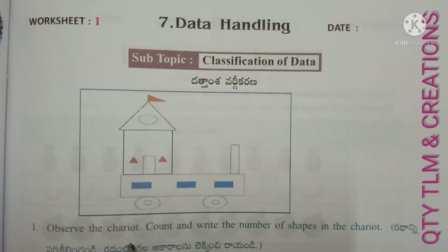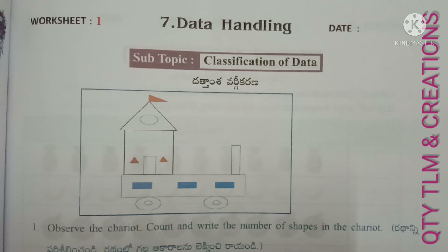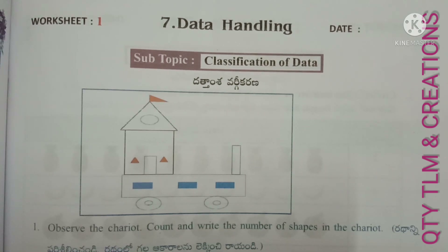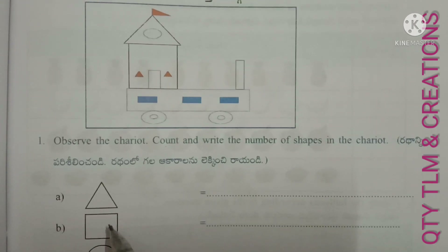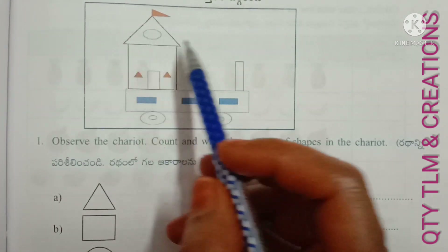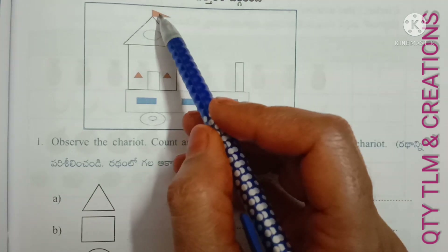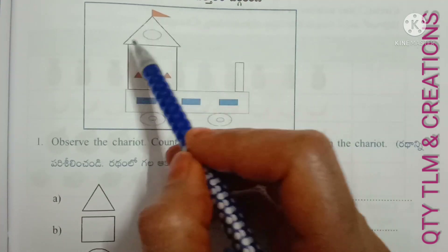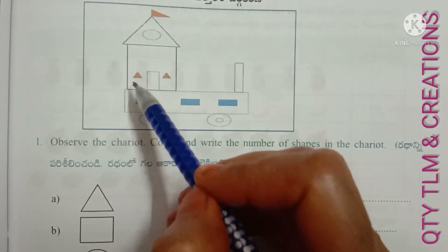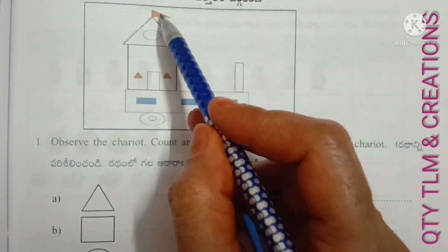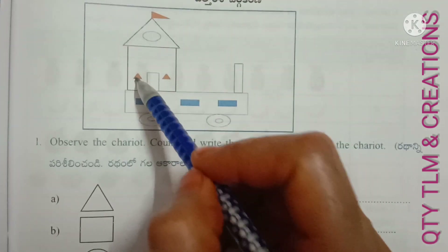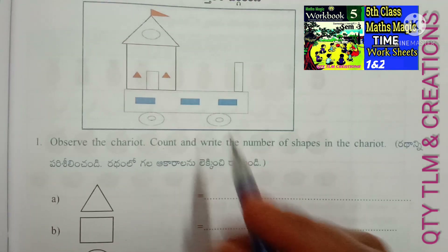Observe the chariot. Count and write the number of shapes in the chariot. Here, the given picture is a triangle. How many triangles are there in the chariot? Shall we count them? This is a triangle. And this one also. Triangle. This one. This one. So, 1, 2, 3, 4. There are 4 triangles in the chariot.